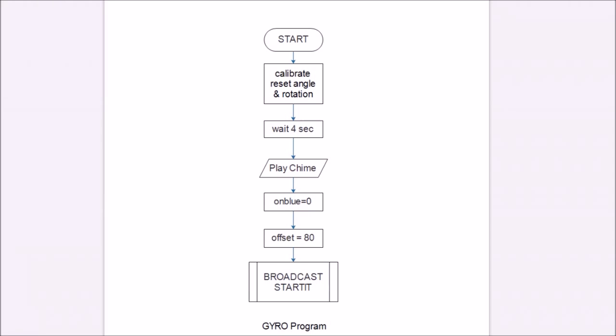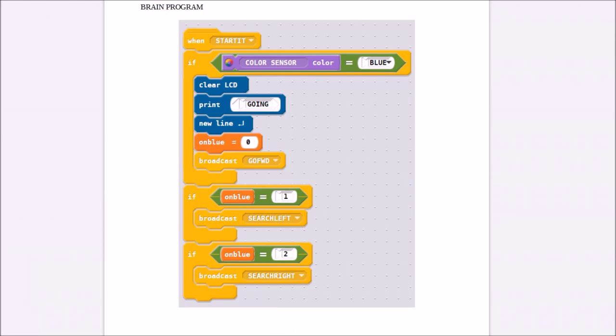So these are the flow charts. And again, you don't have to do these, but just take a look at these and try to understand how the program works. Now when we look at the actual programs, you'll see that it follows very much the way the flow charts are. The brain program starts. There's three if statements. They're conditional. They're called conditional statements because here's how you read them. If, look at the first one, the color sensor color is blue, then clear the LCD, print going, go to a new line on the screen, set on blue equals zero, and you broadcast go forward.